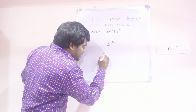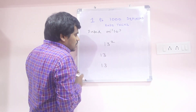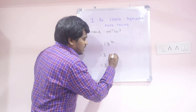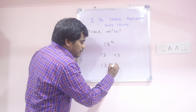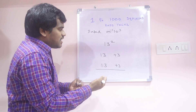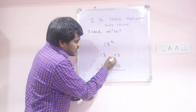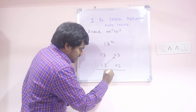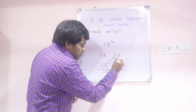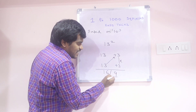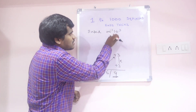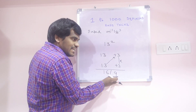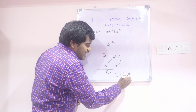Listen very carefully. Write 13, and here also write 13. How much more is 13 compared to 10? So plus 3, and here also plus 3. Now we need to cross add: 13 plus 3 is 16. Slash — multiply these two: 3 times 3 is 9. So the answer is 169.